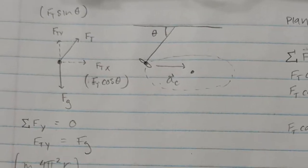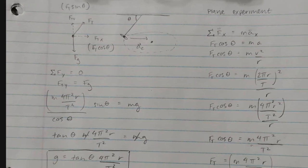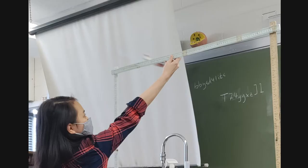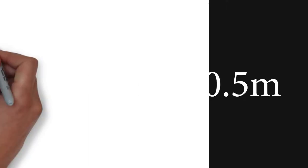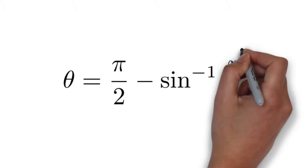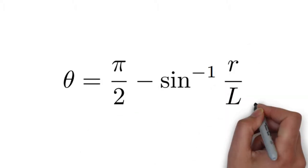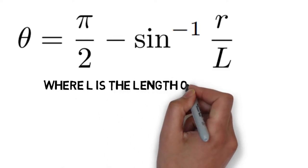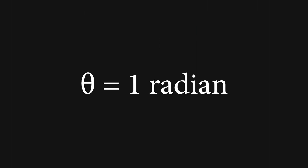With this equation, all we need to find is the angle and radius of the orbit. We used the length of the string, the radius, and trigonometry. We measured the string length and orbit radius with a meter stick: 0.93 meters and 0.5 meters respectively. From trigonometry, our angle equals π/2 minus the inverse sine of r over l, where l is the string length. Plugging in our measured quantities, theta came out to be about 1 radian.